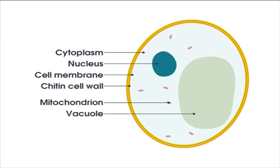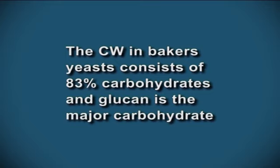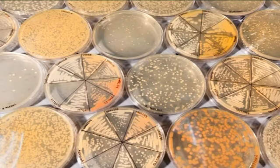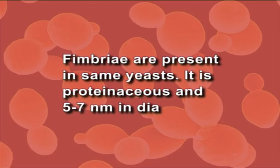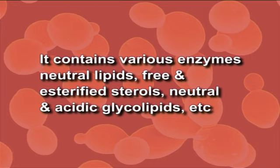Similar to bacteria and molds, the yeast cell wall is rigid and provides shape to the cell, as shown in the figure. It accounts for 25% of dry cell weight. The cell wall in baker's yeast consists of 83% carbohydrates and glucan is the major carbohydrate. It has a single birth scar and several bud scars on its surface. The number of bud scars depends on the number of daughter cells produced by a mother cell. Some yeast have capsular material surrounding the cell, which is antigenic in nature. The genus can be identified by the type of capsular material it has. Fimbriae are present in some yeast and are proteinaceous with a diameter of 5 to 7 nanometers. The cytoplasmic membrane is explained by the fluid mosaic model and contains various enzymes, neutral lipids, free and esterified sterols, and neutral and acidic glycolipids.